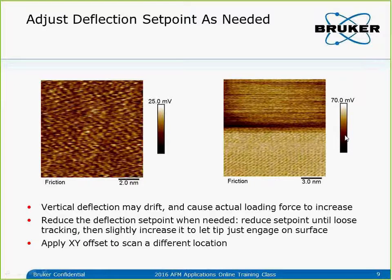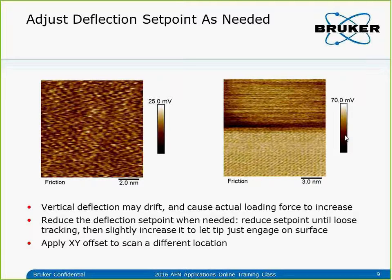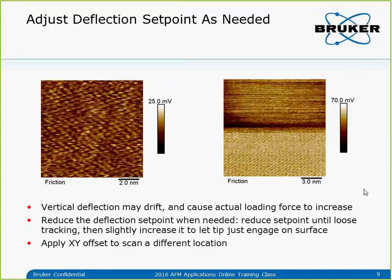When this happens, we need to adjust the deflection setpoint. Reduce the deflection setpoint until the tip retracts because it's below free deflection. Then increase the setpoint by 0.1 to 0.2 volts to let the tip just land on the sample with very small force. If the tip is scratching or crashed somewhere, I will use offset X or Y to move to a new location to scan. This is how we keep the force small to prevent tip crash and keep it sharp.